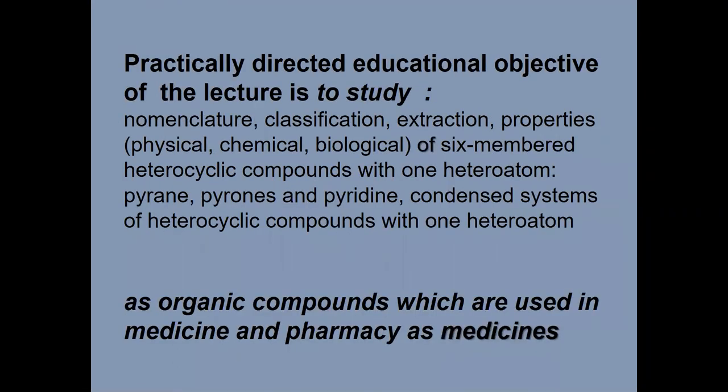The practically directed educational objective of the lecture is to study nomenclature, classification, extraction, properties — physical, chemical, biological — of six-membered heterocyclic compounds with one heteroatom: pyrans, pyrones, and pyridine. Condensed systems of heterocyclic compounds with one heteroatom, as organic compounds which are used in medicine and pharmacy as medicines.